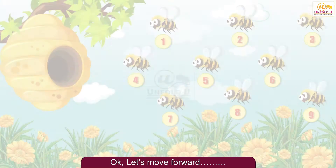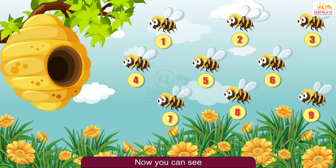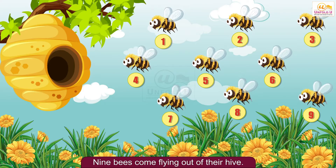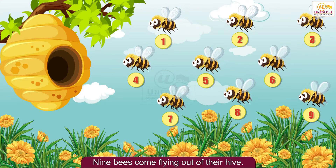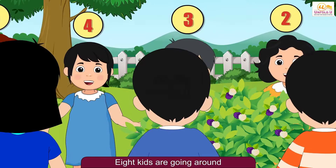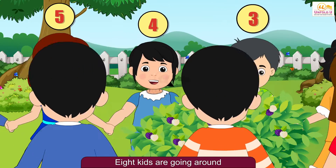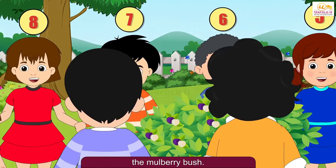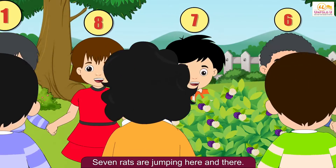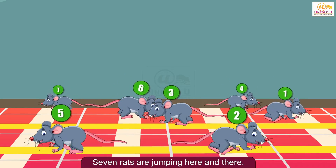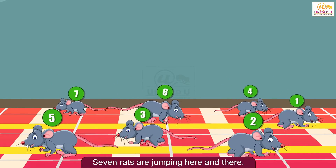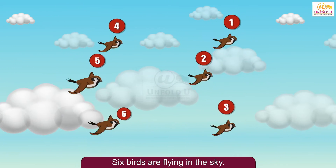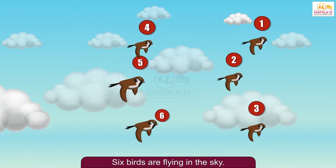let's move forward. Now you can see 9 bees come flying out of their hive. 8 kids are going around the mulberry bush. 7 rats are jumping here and there. 6 birds are flying in the sky.